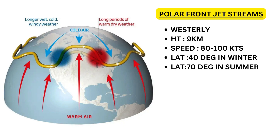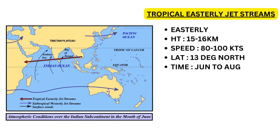Apart from the permanent presence of subtropical and polar front jet streams, we also have a temporary jet stream in the tropical zone called the tropical easterly jet stream. As the name suggests, it occurs in the tropical area and flows from east to west, i.e. it is an easterly wind. The temperature contrast required for this tropical easterly jet stream is due to intense heating of the Tibetan Plateau in summer. Its location is about 13 degrees north latitude, going over Chennai at a height of 15 to 16 km. The tropical easterly jet stream extends from Southeast Asia to Africa.